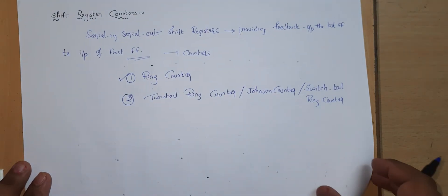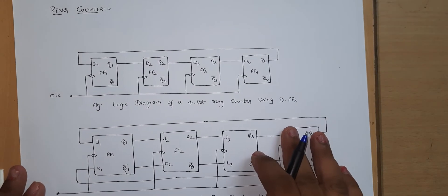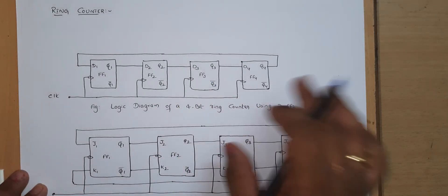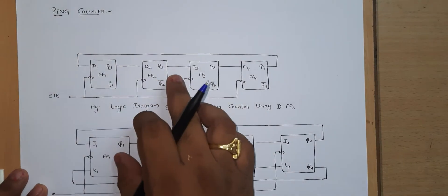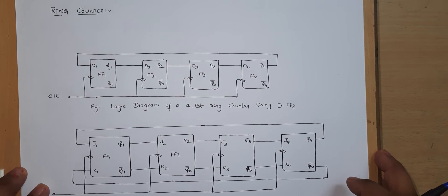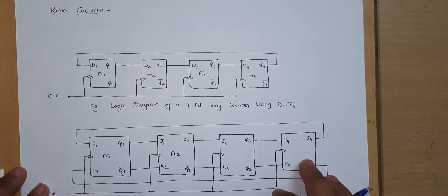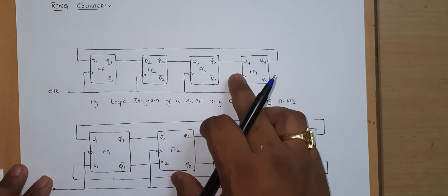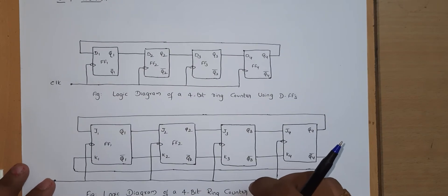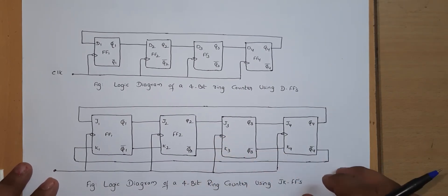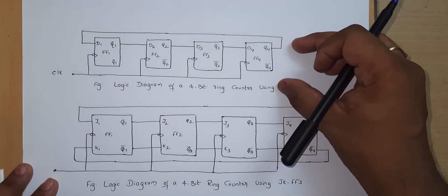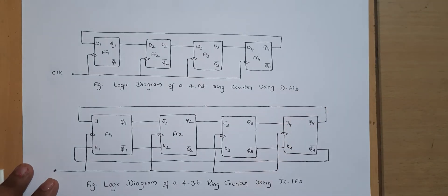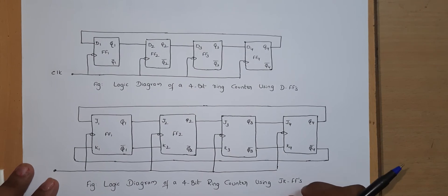Let us discuss the first type: the ring counter. The ring counter is the simplest shift register counter. This basic ring counter can be implemented using D flip-flops, and equally it can be realized using JK flip-flops. You will see the circuit diagram — this is the 4-bit ring counter logic diagram using D flip-flops, and this is the 4-bit ring counter realized using JK flip-flops.